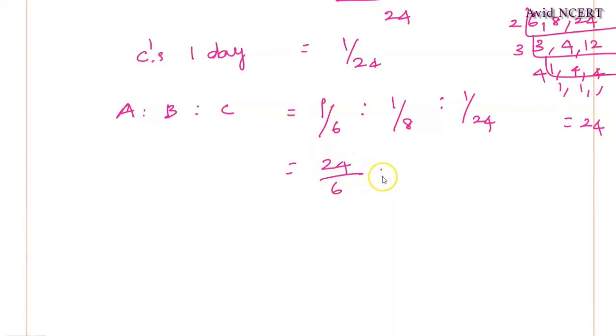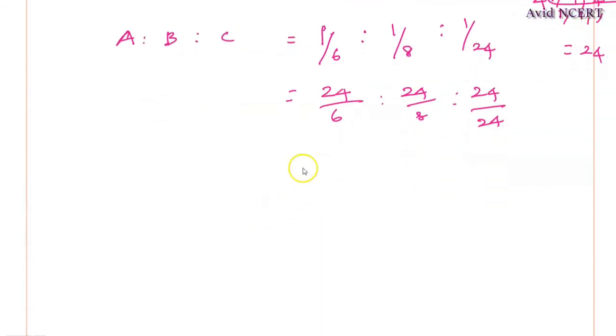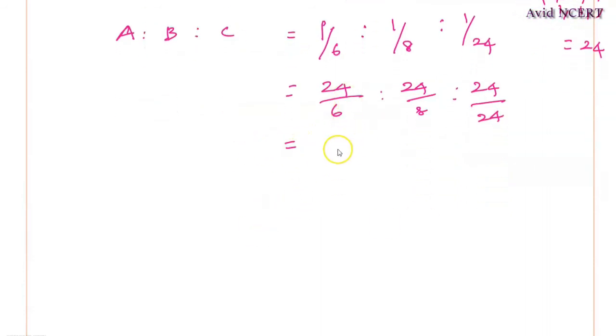So here it is 24 by 6 is to 24 by 8 is to 24 by 24. So which is equals, 6, 4 times is 24 is to 8, 3 times is 24 and 24, 1 times is 24. So the ratio of A is to B is to C is 4 is to 3 is to 1.